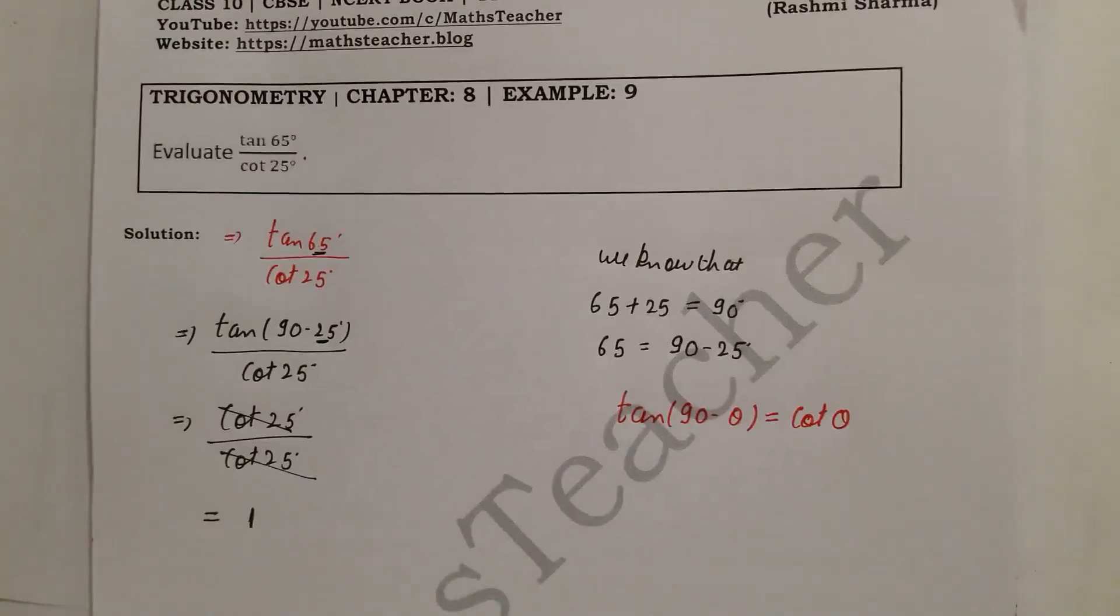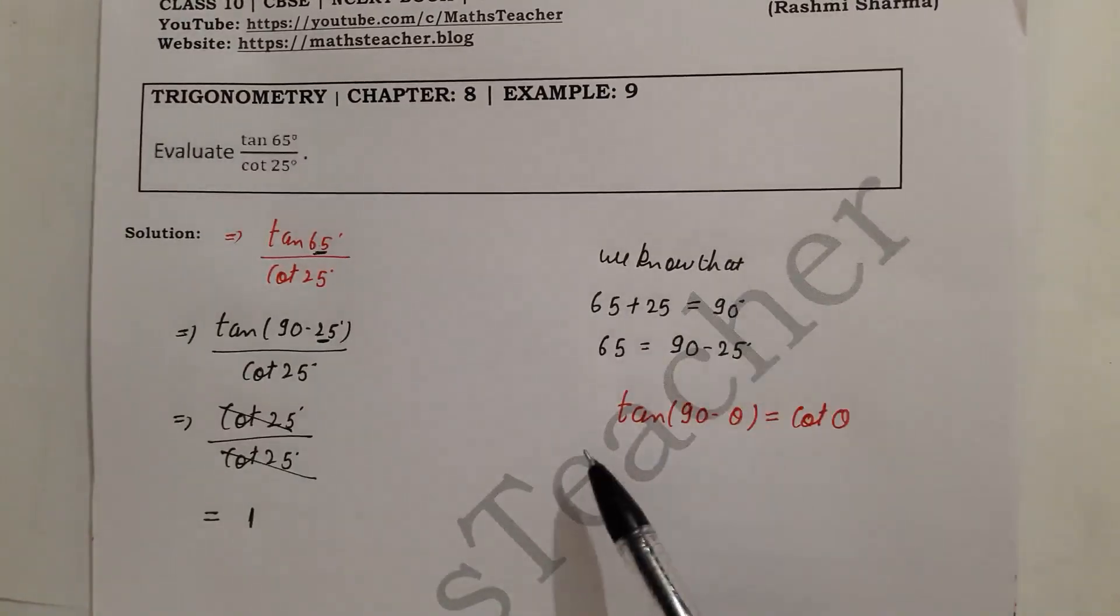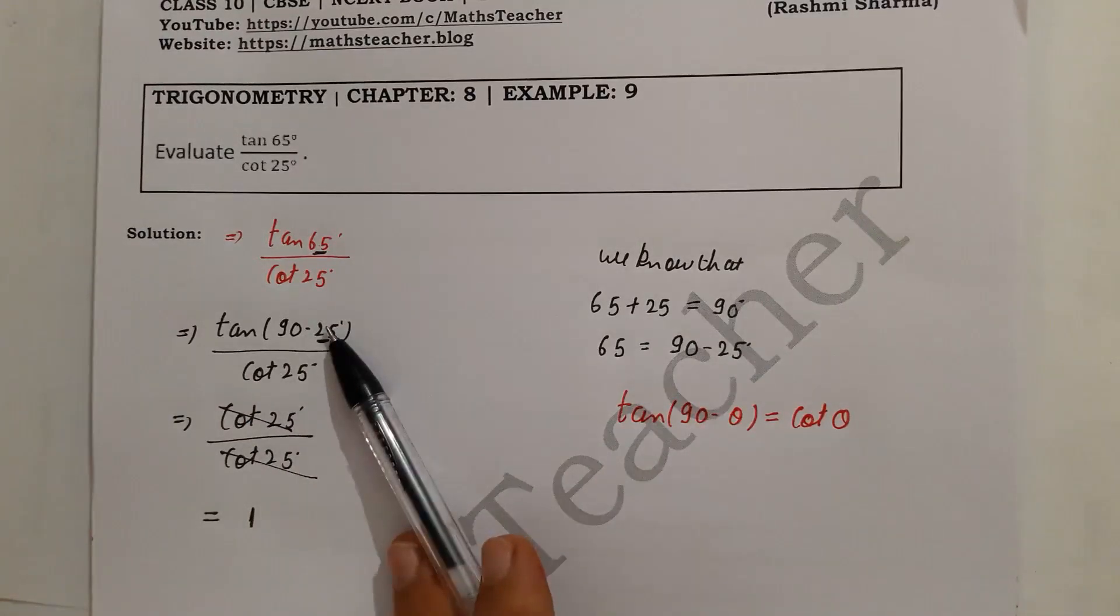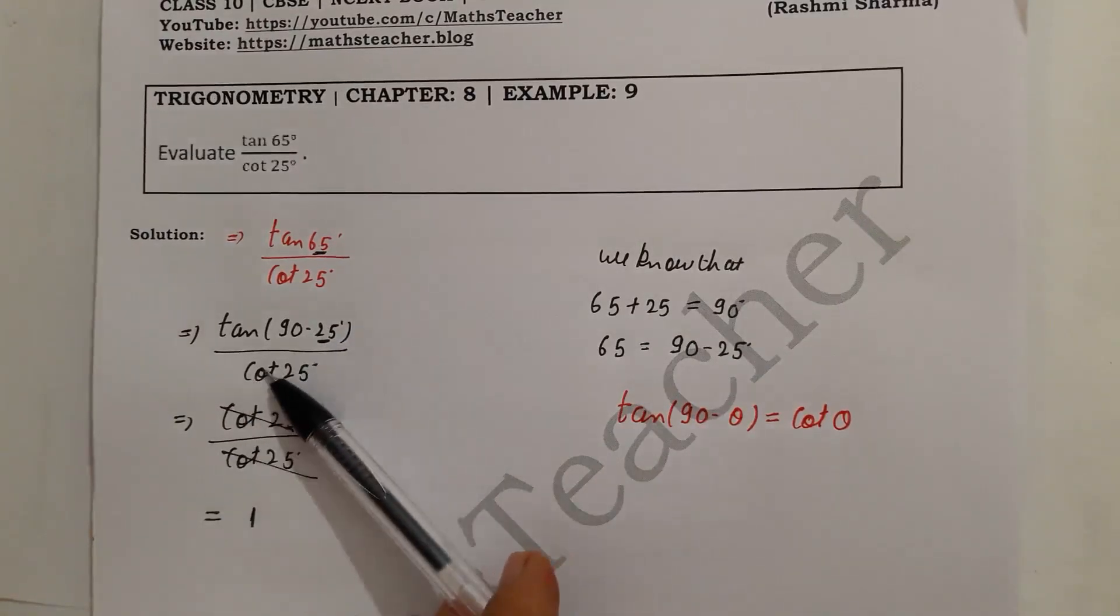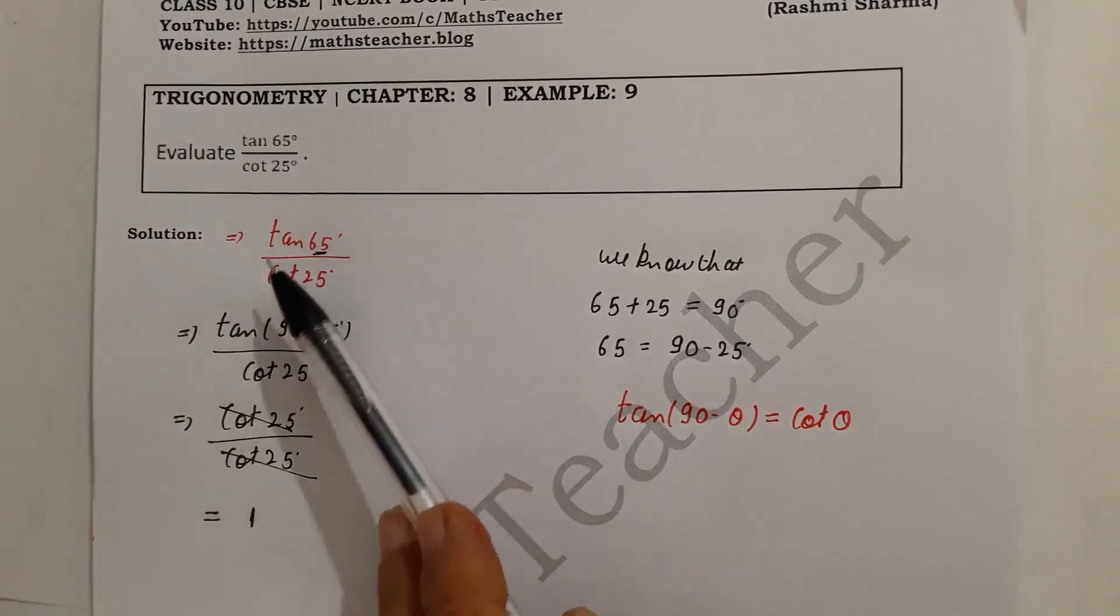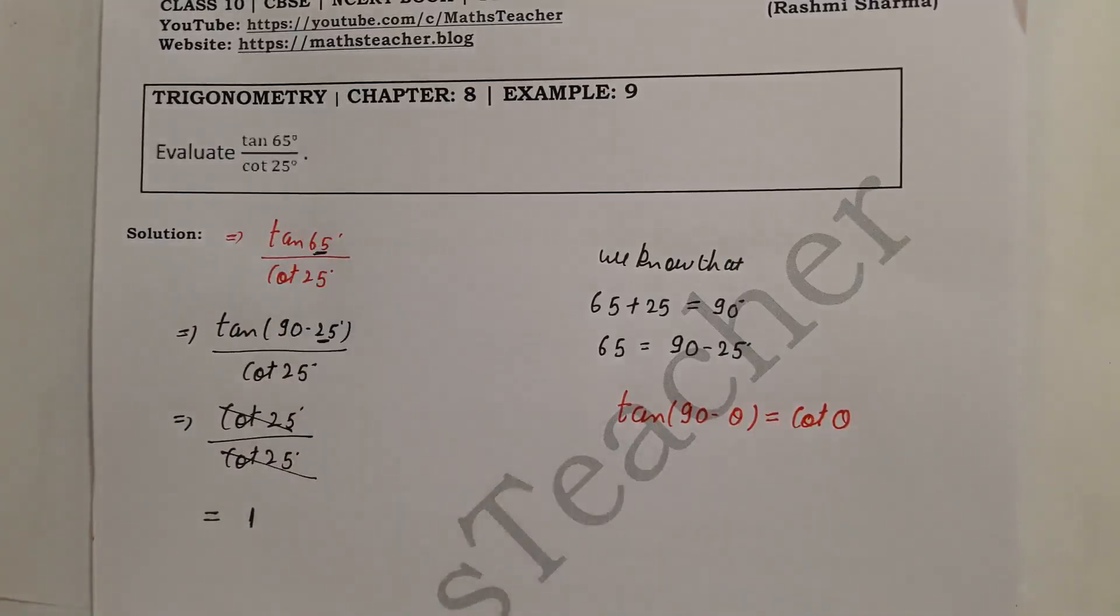So you have to solve this question and learn the identities. Students are very confused, so they will change both - if you change both, cot will become tan and tan will become cot, giving the same question.